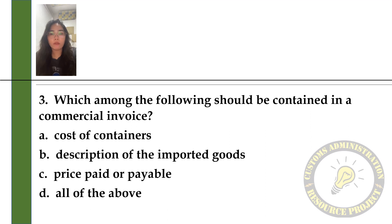Question 3. Which among the following should be contained in a commercial invoice? A. Cost of containers, B. Description of imported goods, C. Price paid or payable, or D. All of the above.